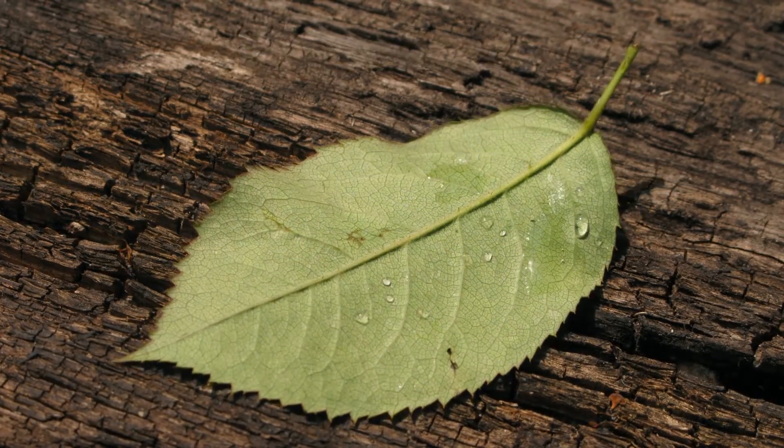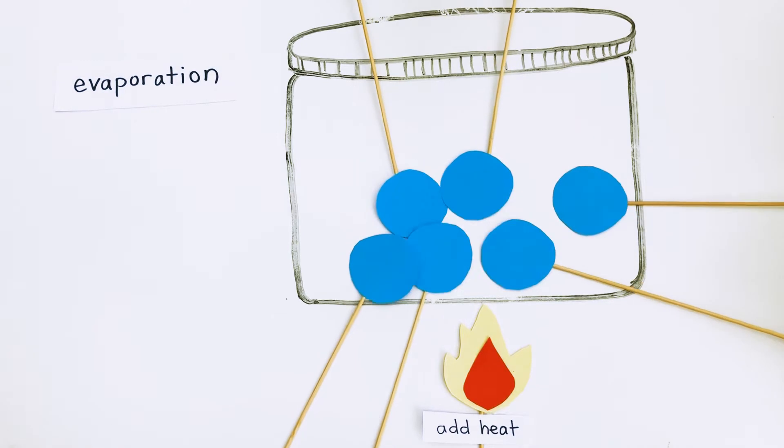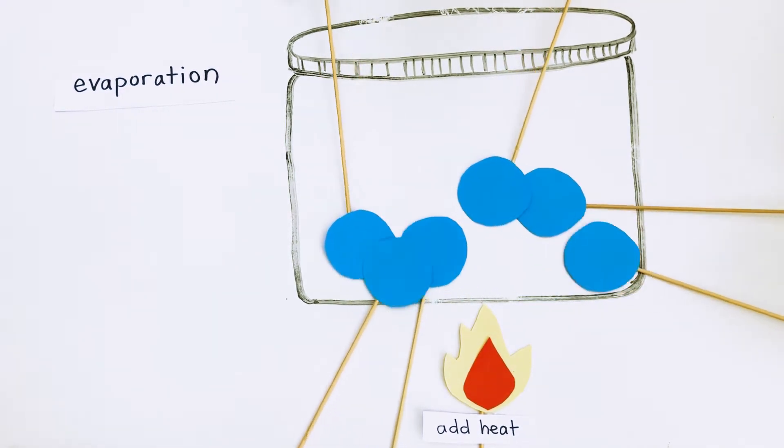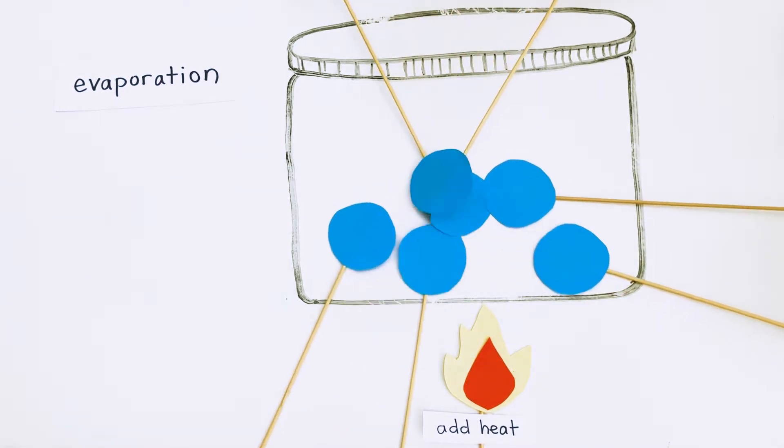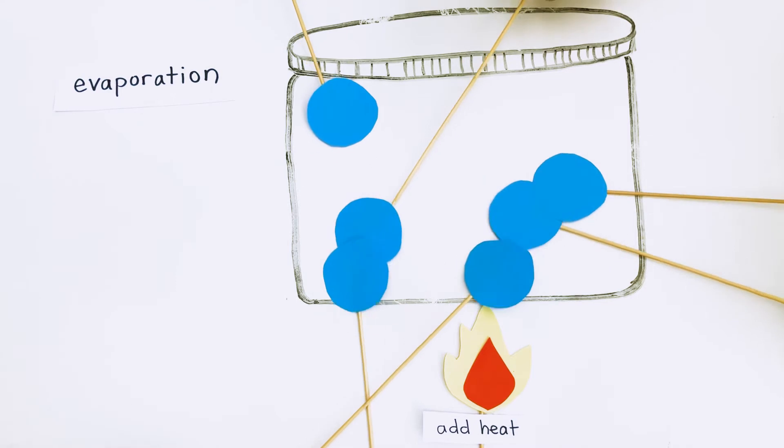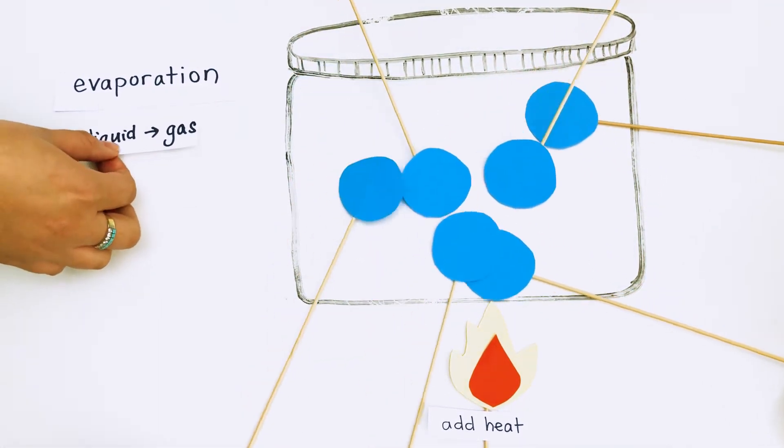Evaporation. Evaporation happens because particles in the liquid speed up. Eventually the particles move so fast that the attraction between them can't keep them together. The particles spread out and fill the whole space. The liquid has turned into a gas.